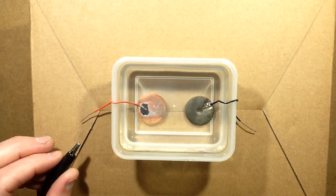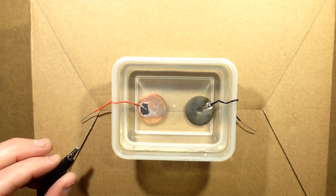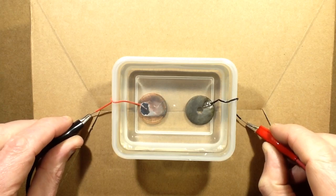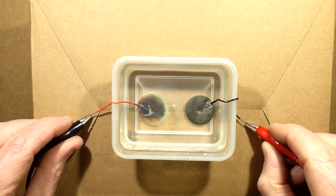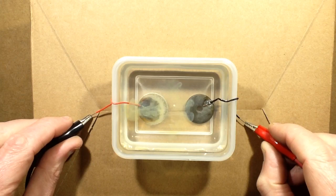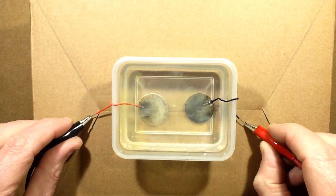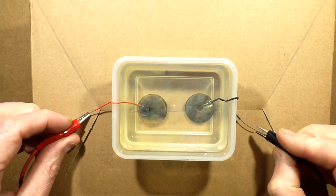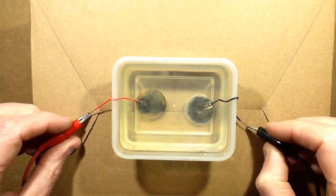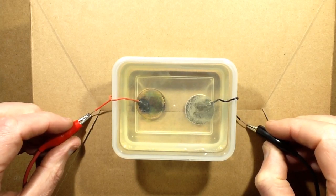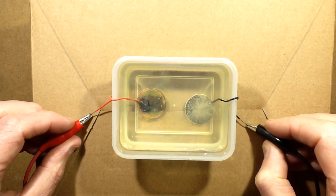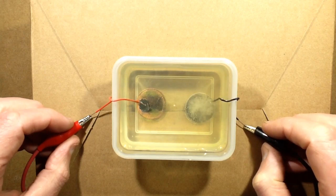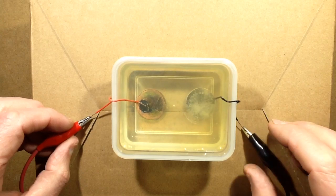The bench supply is currently set to 1 amp current limit and 4.5 volts. Connecting it in reverse polarity to the other, the 2 pence coin immediately goes black and starts giving off green coppery salt. And connect it the other way round. Current is about 400 mA. The other coin, the steel one, starts fizzing.